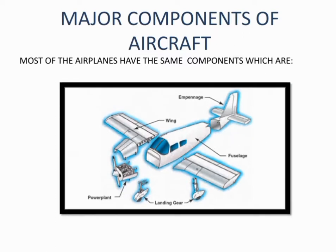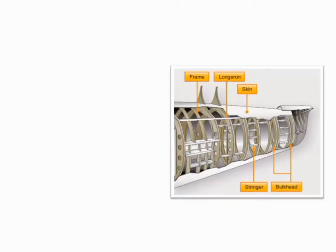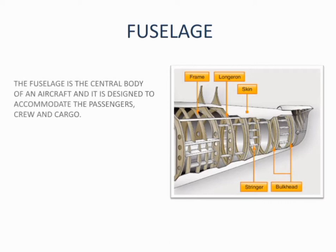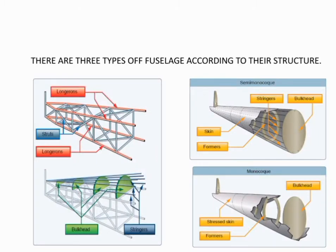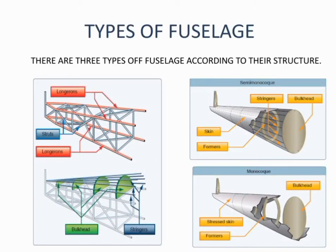Let's start with the fuselage. The fuselage is the central body of an aircraft and it is designed to accommodate the passengers, crew, and cargo. The other main components of the aircraft are also connected with the fuselage. There are three types of fuselage according to their structure, as you can see in the picture.